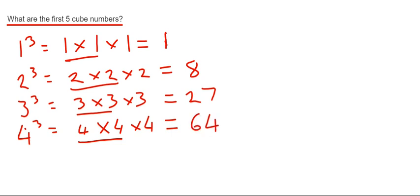Our final cube number is 5 cubed, which is 5 times 5 times 5. If we do 5 times 5 first, that's 25, and then times the answer by 5 again, which is 125.